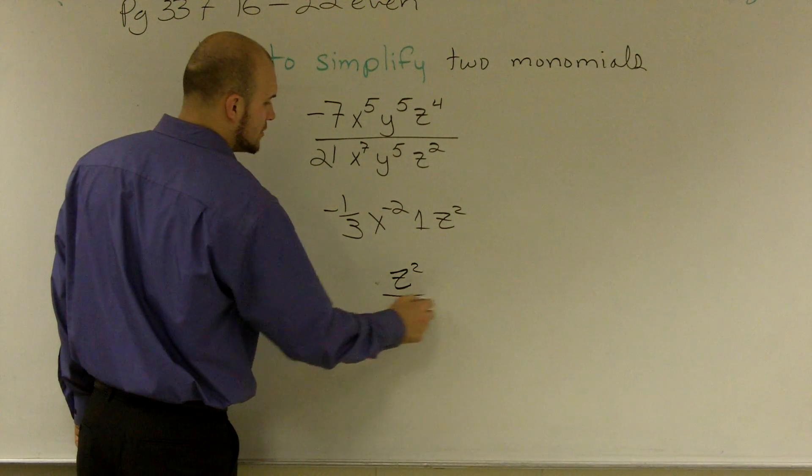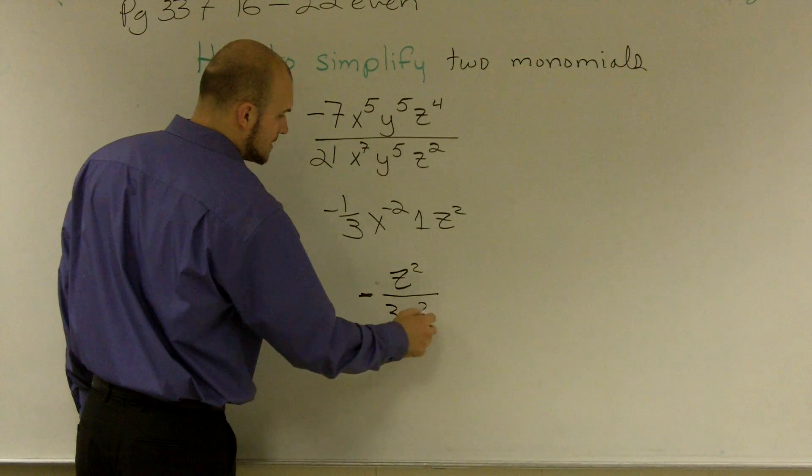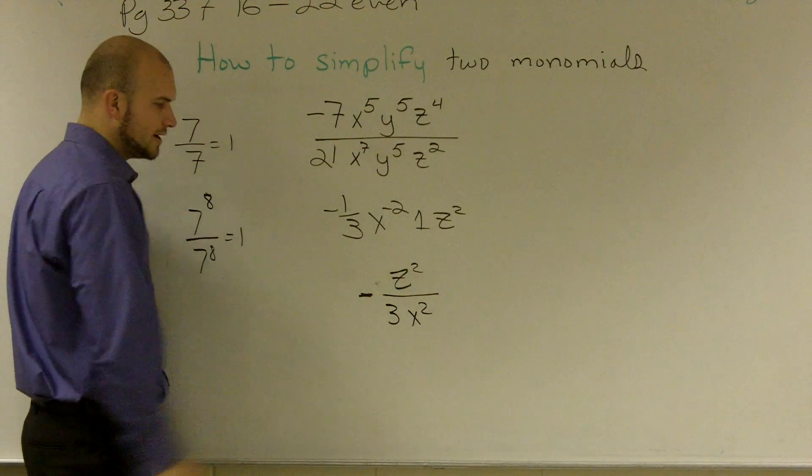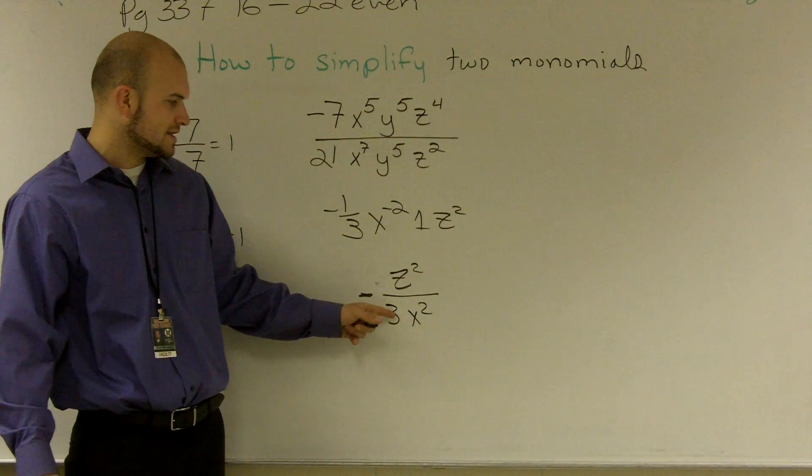So I'll have z squared over, this is negative, 3 x squared. The y's cancel out to 1, and I have my z on top. It's negative. And the 3 is essentially on the bottom, x squared.